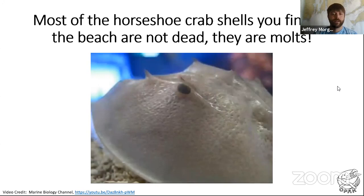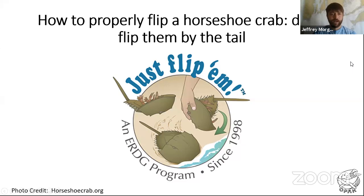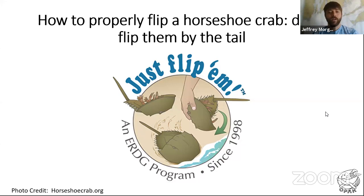Horseshoe crabs don't really have a lot of predators other than humans, but things like sharks and turtles could crush their shell when it's soft out of that molt. Many things don't eat horseshoe crabs because they don't have a lot of meat. If you do find a horseshoe crab on the beach, oftentimes they are upside down because they've been crashed in through a wave. Most people's reaction is to pick them up by their tail — you do not want to do that because you can break the tail, which we call the Telson.